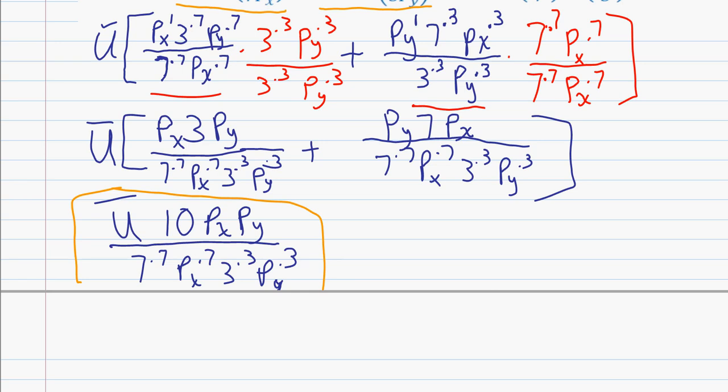Which you're going to end up getting 10 u bar, you see where the 10 and the u bar come from here, times py over 7 to the point 7 times px over 3 to the point 3. Once you get to this point I think you can figure out how you can rearrange these terms to get it to look something like this.